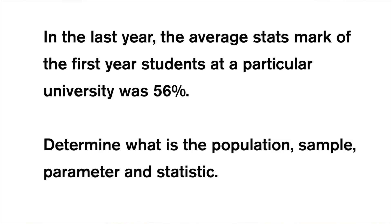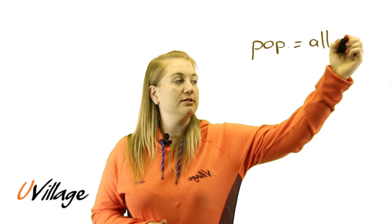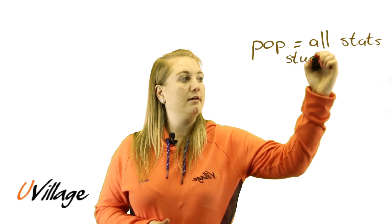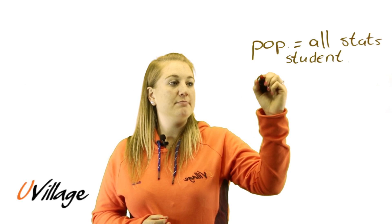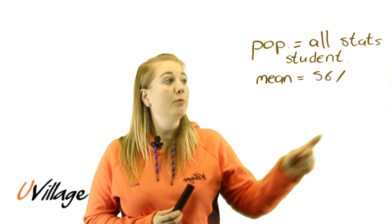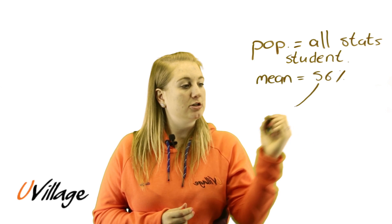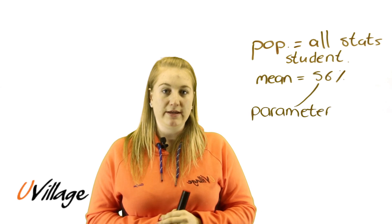Let's look at another example. In the last year, the average stats marks of first year students at a particular university was 56%. Determine what the population, sample, parameter, and statistic are. In this example, we calculated the average stats marks of all the first year statistics students, so the population of interest would be all the stats students in first year. The value calculated — 56%, which represents a mean — was calculated using information from all the stats students, which means this percentage represents a parameter. No sample was taken and no statistic was calculated; we used all the individuals in this population.